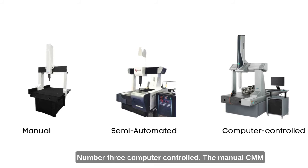The manual CMM has a free-floating probe that the operator moves along the machine's three axes to establish contact with part features.